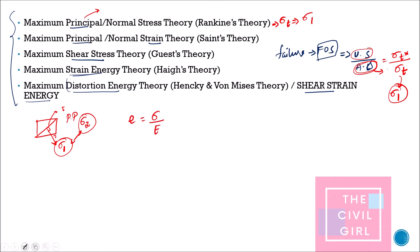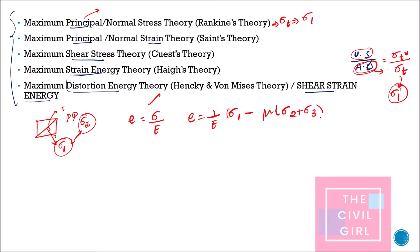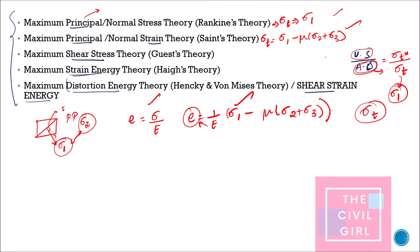Next is maximum principal strain theory. Strain equals stress divided by modulus of elasticity for one stress. When more than one stress is involved, the formula is: strain = (1/E) × [sigma_1 − μ(sigma_2 + sigma_3)], where μ is Poisson's ratio. So sigma_t takes the value sigma_1 − μ(sigma_2 + sigma_3).